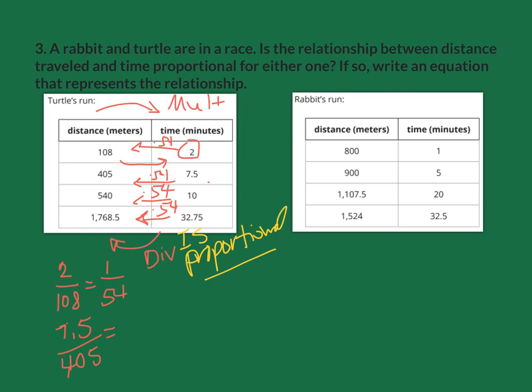This one over here, preferably the time is on the left side, not the distance. If we look at it the same way, in one minute we can run 800 meters. That would mean every time we could multiply times 800.